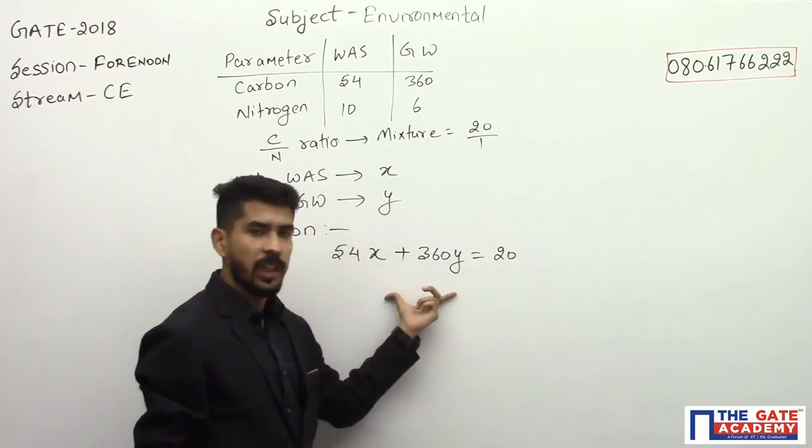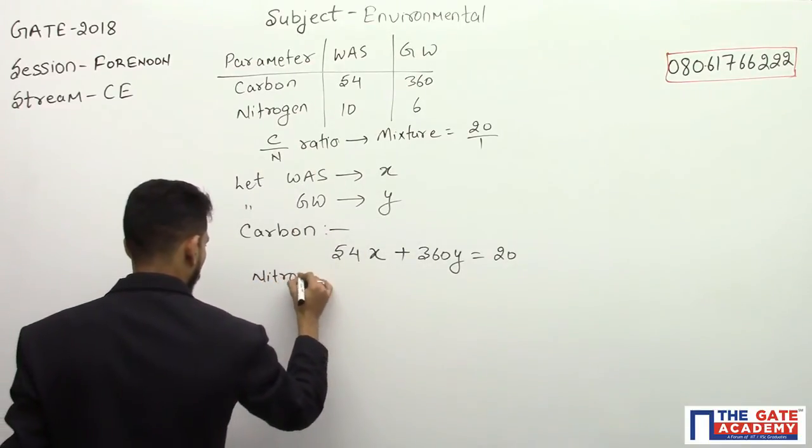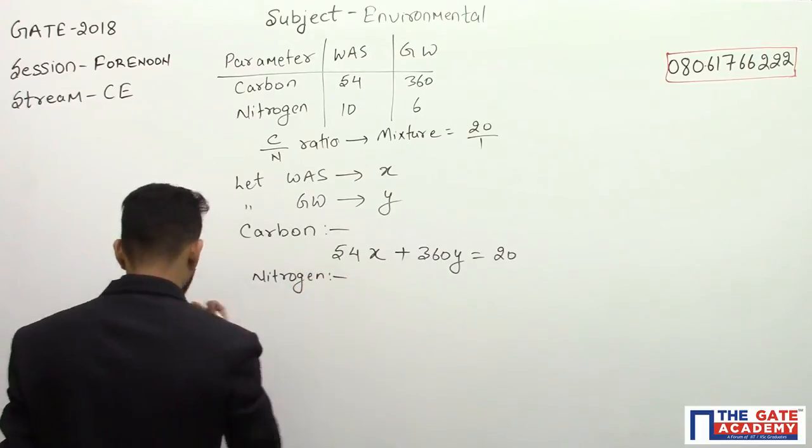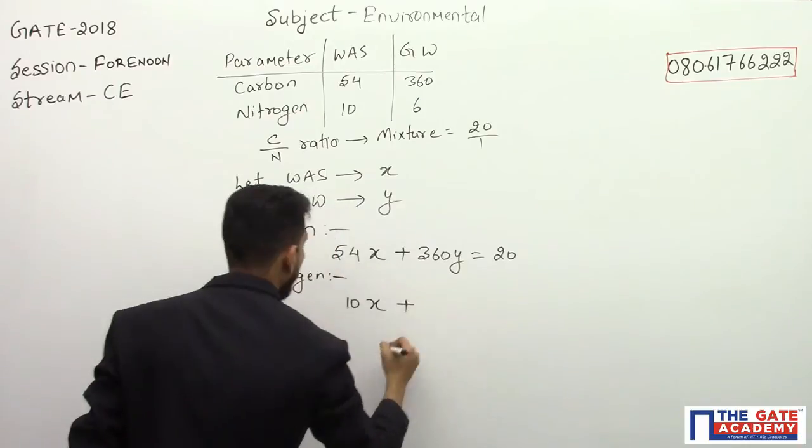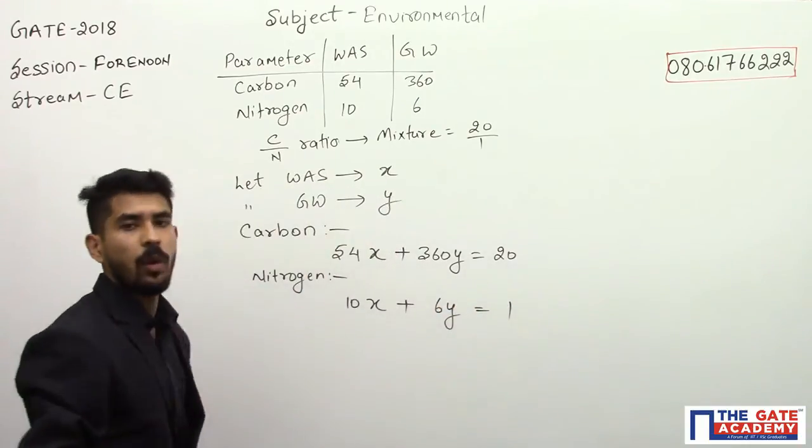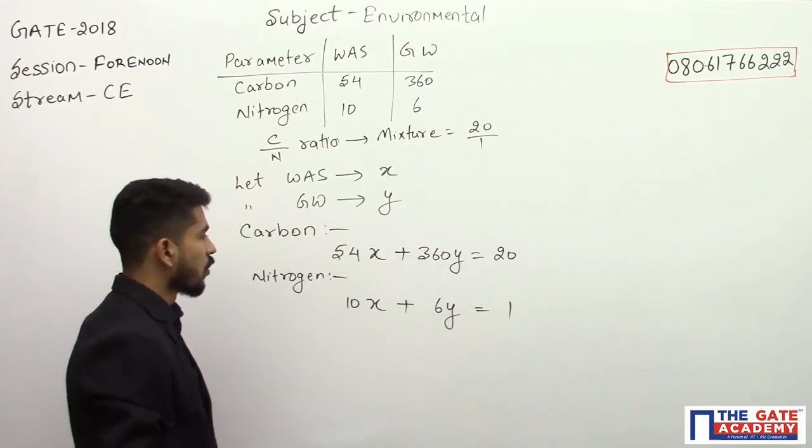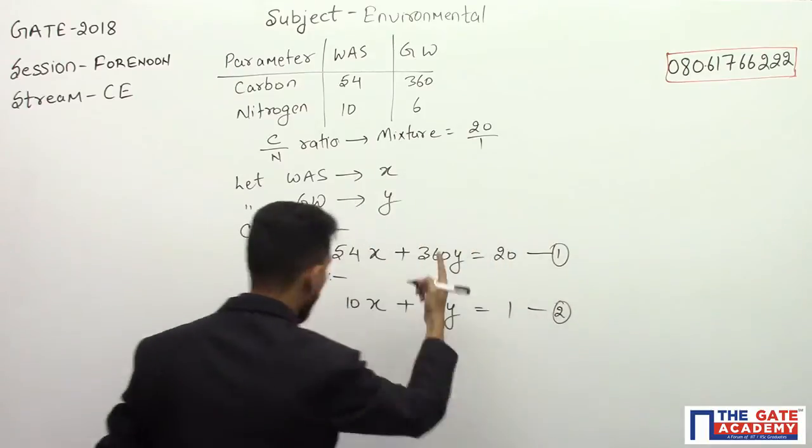For nitrogen, we can write 10 parts of X plus 6 parts of Y equals 1. The resultant is 1 for nitrogen, so we have both equations, equation 1 and equation 2.